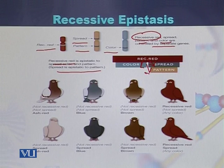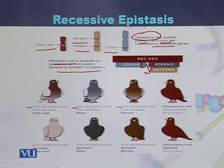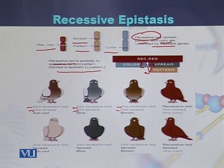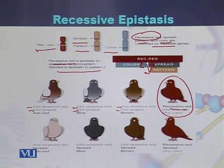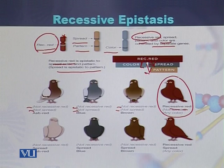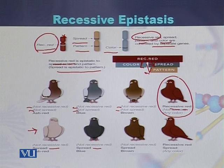Looking at pigeons where there is no recessive red and no spread gene, we can see different colors among those three types of pigeons. However, if there is a recessive red gene present on the chromosome, the color of the pigeon will be different from the other three. In the lower row, where only the spread gene is present but no recessive red, we can observe different pigeon colors.